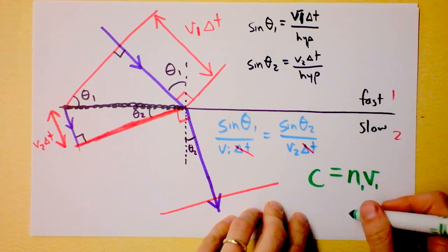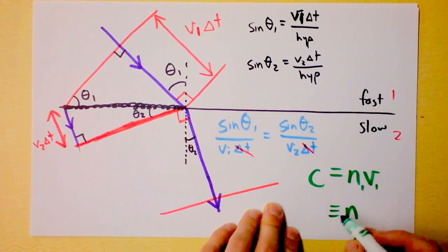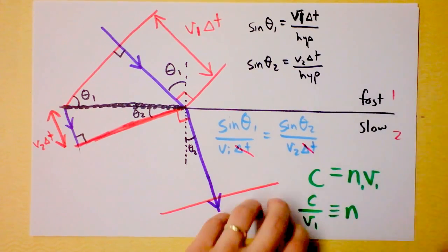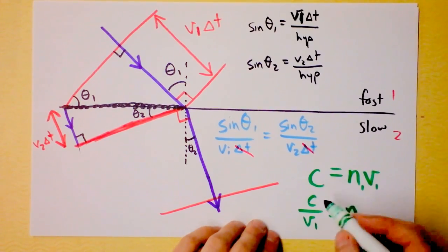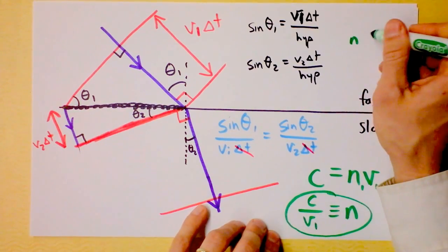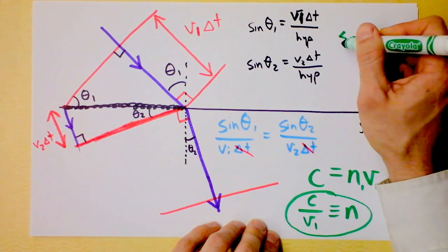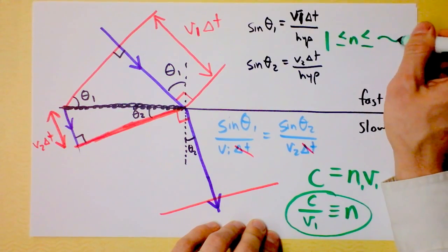Or, I could say that the index of refraction is defined to be the speed of light divided by the speed of light in the material. Now, you know that the fastest light goes is when it doesn't have a material to go through, right? So you know that this index of refraction, what are we going to say, n is, what's the smallest that n can possibly be? It's going to be greater than or equal to one, and it could be all the way up to infinity.